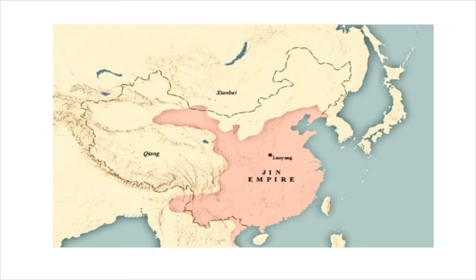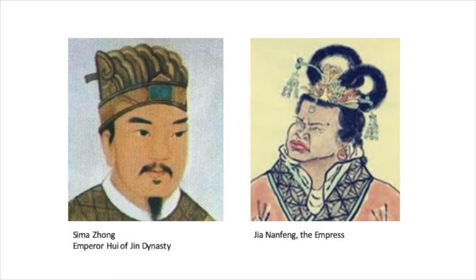Now that Jin unified China, it should be a great dynasty — so why is it not usually mentioned in textbooks like other major dynasties? Well, this unification was neither stable nor long-lasting. The unification happened in 280, and Emperor Sima Yan died in 290 — that's only 10 years. After his death, his son Sima Zhong became the new emperor, known as Emperor Hui. However, Emperor Hui is famous for his low intelligence and was incapable of ruling such a big empire. The power of the court fell into the hands of his wife, Empress Jia Nan.